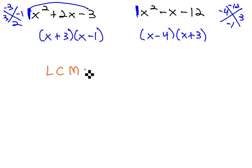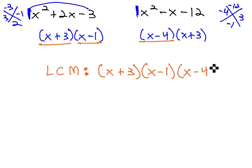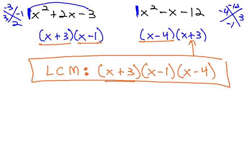And then for the least common multiple or least common denominator, we have an x plus 3 factor, an x minus 1 factor, an x minus 4 factor. And then there's no need to list the x plus 3 again. It's already there, and so this becomes our least common multiple, because there's no exponents in the factor, no exponents in the least common multiple.